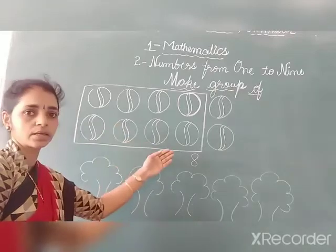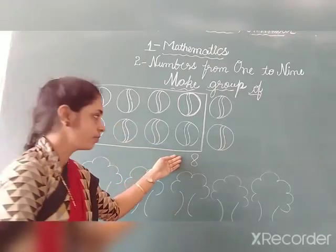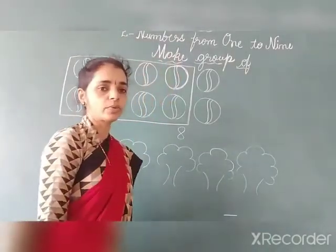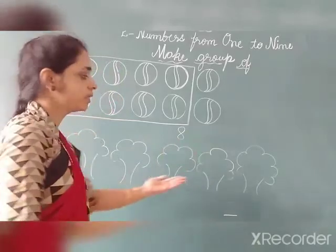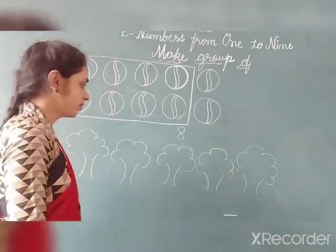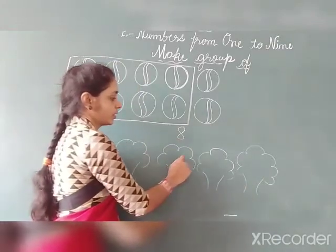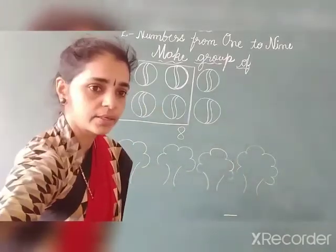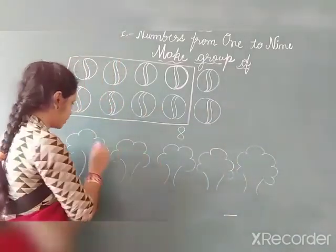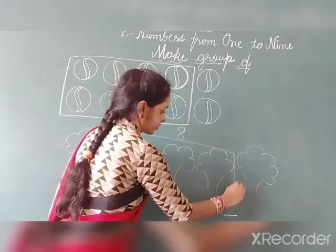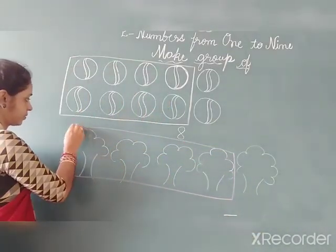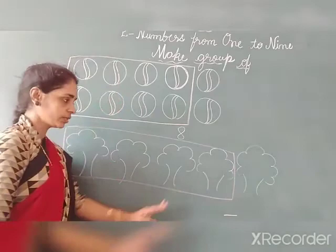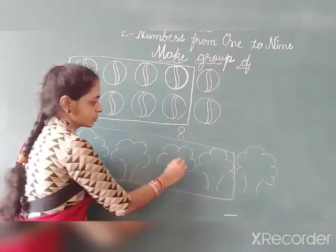Now let us make a group of four trees. How many trees do we have? We have one, two, three, four, five trees. Now make a group of four trees: one, two, three, four. This is our group of four trees.